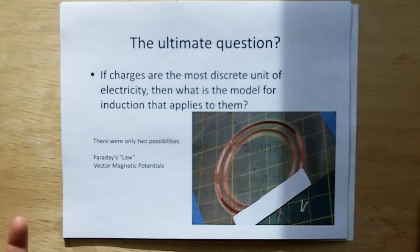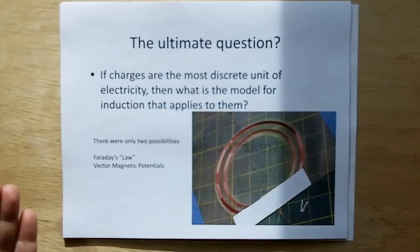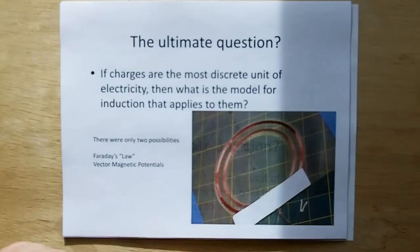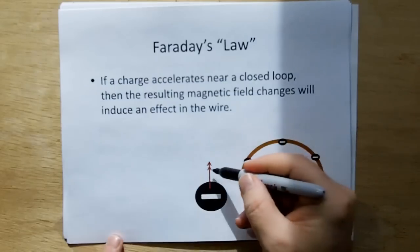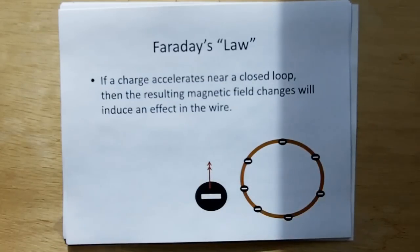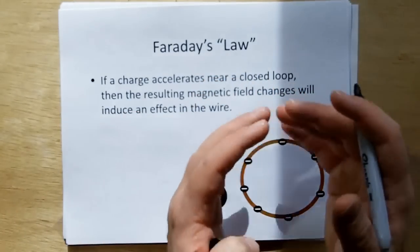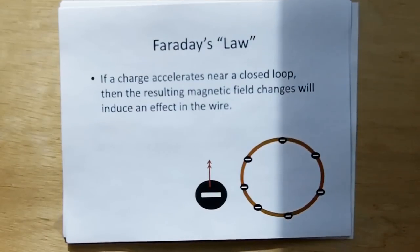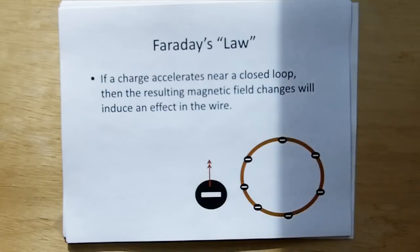And there were only two possibilities out there that could apply charge acceleration, which in circuits is a changing current, to charge force. That's Faraday's law and vector magnetic potentials. And so for Faraday's law, not too bad. If I have an accelerating charge, and this dual arrow is my symbol for an accelerating charge, it's going to create a changing magnetic field. And that changing magnetic field can couple to a coil of wire. And we would know then the EMF acting on the charges in the target loop. And that's fine.